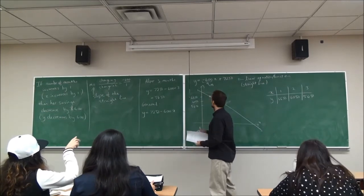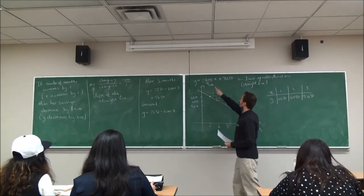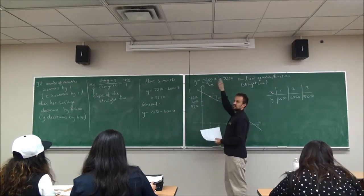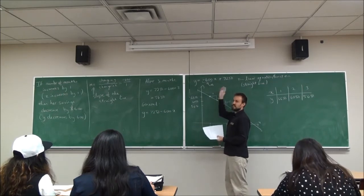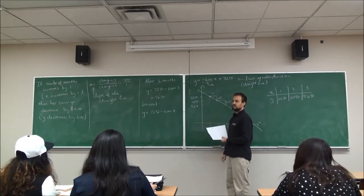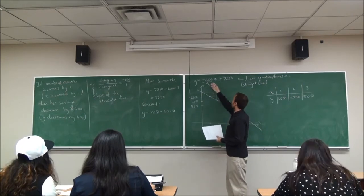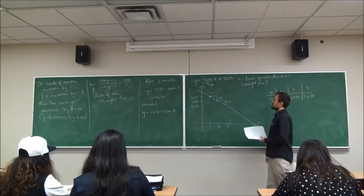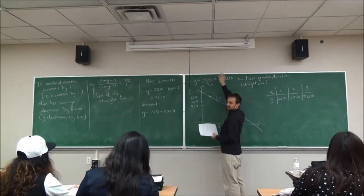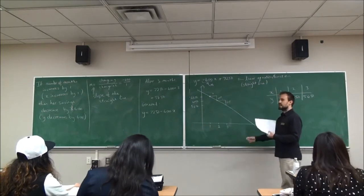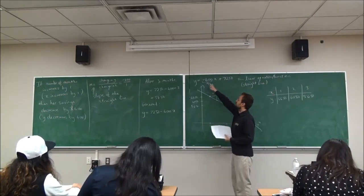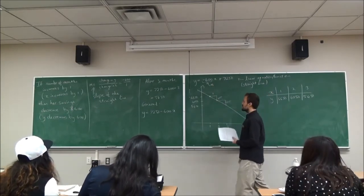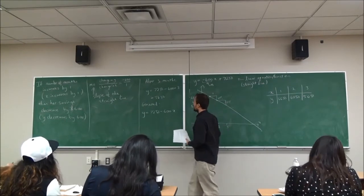Student question: Why did you switch the two terms? It's really just for aesthetics — it just looks nice. But does it matter? No. If you look at a book, they'll show it different ways — there are so many different ways and it's all the same. The standard form puts the X term first and then the constant. It doesn't matter. As long as you remember the coefficient in front of X — that's the slope. The slope is arguably the most important thing to be aware of.